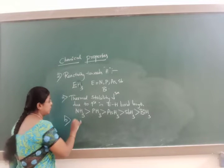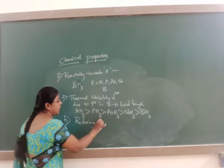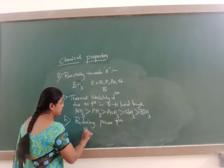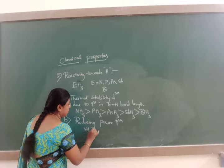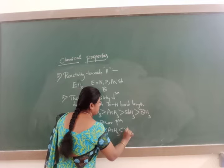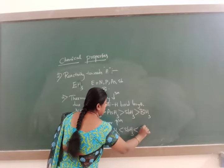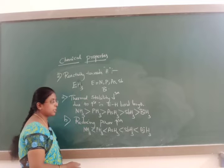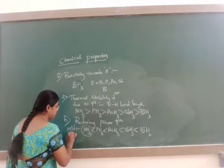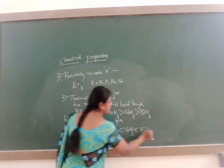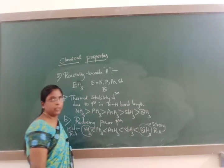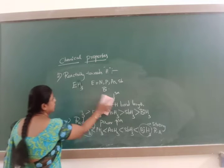Reducing power increases from NH3 to BiH3. Due to increase in the size, the reducing power increases. NH3 is a mild reducing agent, while BiH3 is a strong reducing agent. This is about the reducing power.